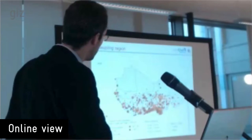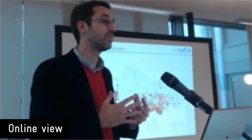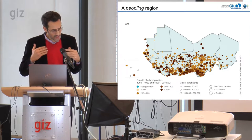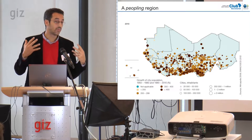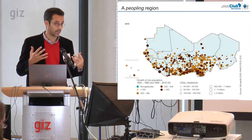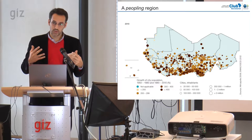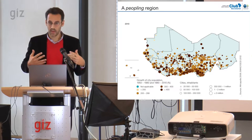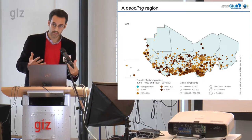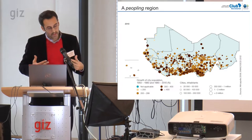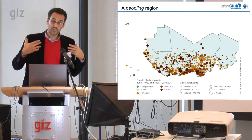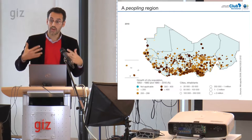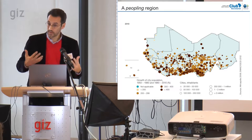Urban population moved from about 5 million to 150 million today. About 42% of the overall population now lives in urban areas, which means there is a correspondingly growing number of people no longer engaged in agricultural activities.